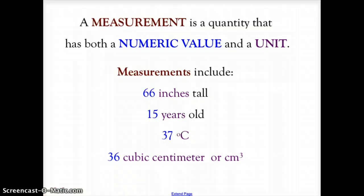Now, a measurement is any quantity that has both a numeric value, a number, and a unit. So measurements could include 66 inches tall, 15 years old, 37 degrees Celsius, 36 cubic centimeters, where 66 is the numeric value and inches is the unit, 15 is the numeric value and years is the unit, 37 is the numeric value with degrees Celsius as the unit, and 36 with cubic centimeters as the unit.